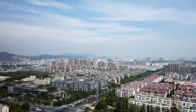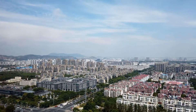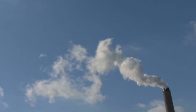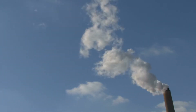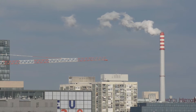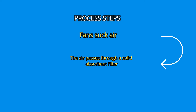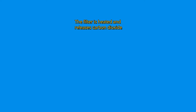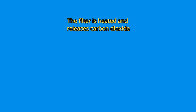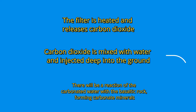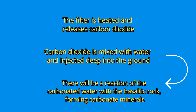A second alternative for removing carbon dioxide from the air is direct carbon capture. In this case, the process consists of chemically purging carbon dioxide from the air and storing it in long-lived products or underground. It is an expensive technology and the energy consumption is high. In this process, fans suck air, and the air passes through a solid absorbent filter. Carbon dioxide is retained in the filter, and the filter is heated and releases carbon dioxide. Carbon dioxide is then mixed with water and injected deep into the ground, where it reacts with basaltic rock, forming carbonate minerals.